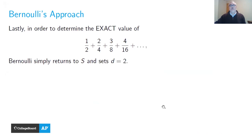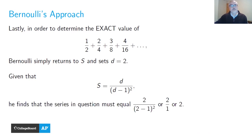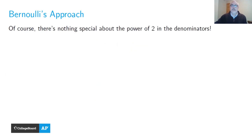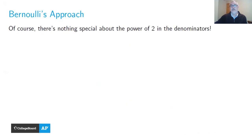So the original sum S with 1, 2, 3, 4, … in the numerators is exactly equal to d/(d−1)². This was the series we wanted, and d equals 2 to get powers of 2 in the denominators. Plugging d=2 into the formula gives 2/(2−1)² = 2/1 = 2. That was the original result we saw earlier in Bernoulli's table. There's nothing special about the power of 2 — the denominators could have been powers of 3, 5, π, or e.